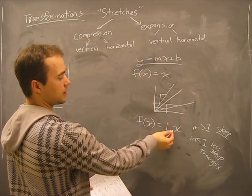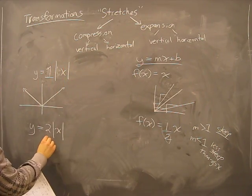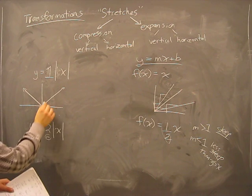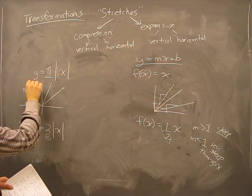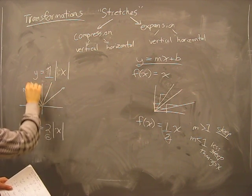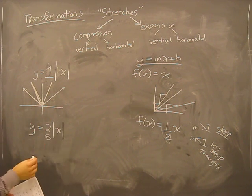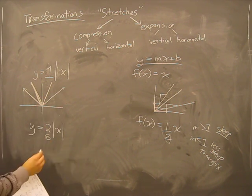what this does, just like here, when we change this, this is our m, we're changing our slope. We're going to get a new graph that looks like this. The slope is now a slope of 2 in both directions.